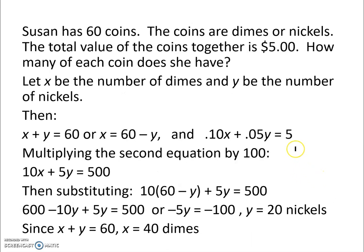Susan has 60 coins. The coins are dimes or nickels. The total value of the coins together is $5. How many of each coin does she have? Well, let x be the number of dimes, and y be the number of nickels. We know that x plus y equals 60, because that's how many coins she has. Taking y over to the other side, we can say x equals 60 minus y.